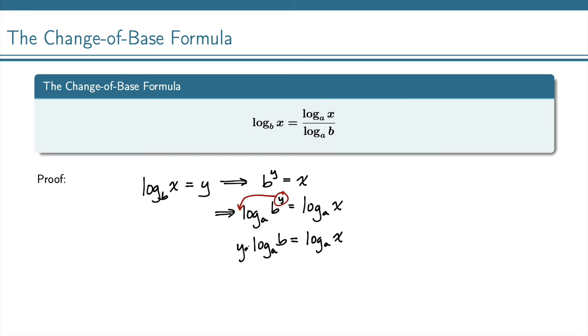Now we're going to isolate y, because y is what this original logarithm was. Let's get y by itself. When we divide by this logarithm, we have y equals log base a of x over log base a of b.